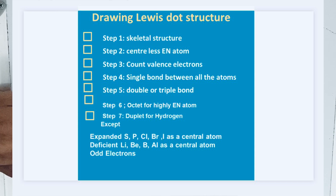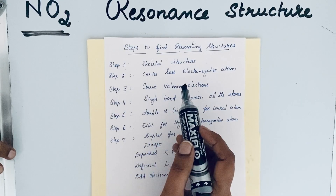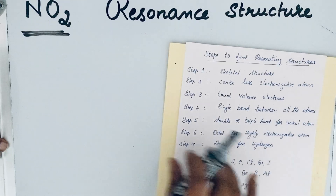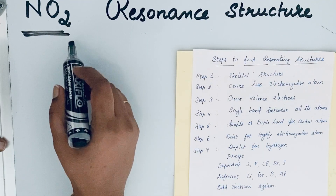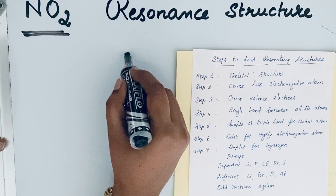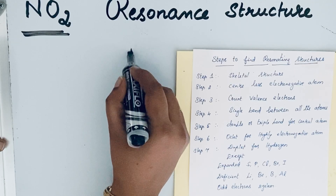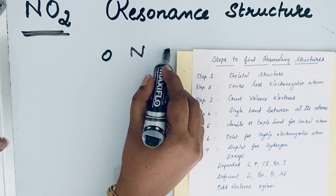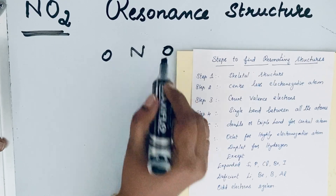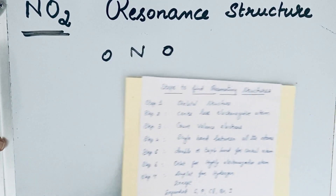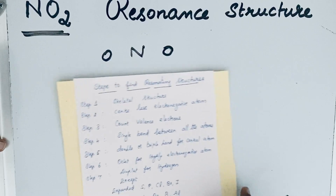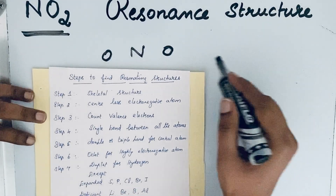Step 1 is the skeletal structure. While drawing the skeletal structure, Step 2 says the center should be the less electronegative atom. In NO2, nitrogen is less electronegative, so let us write nitrogen in the center, with both oxygen atoms at the terminals.